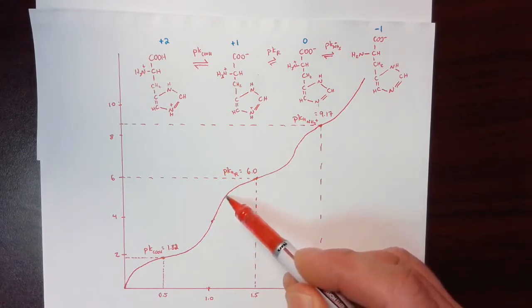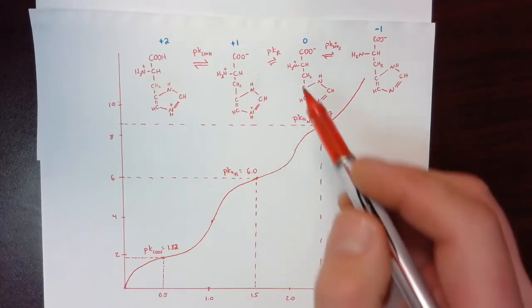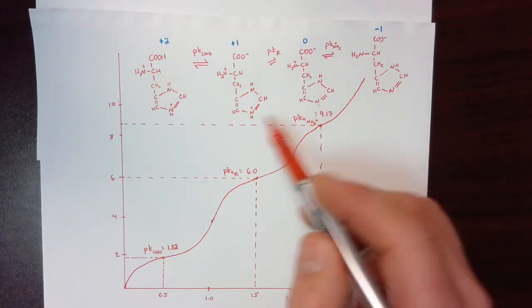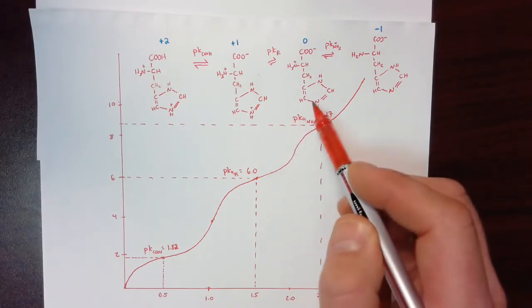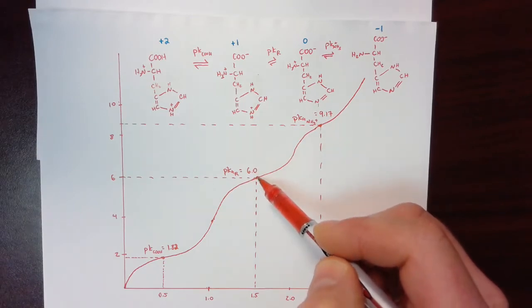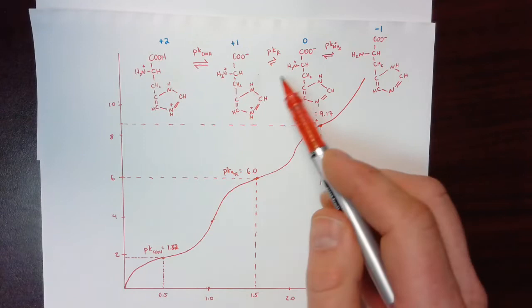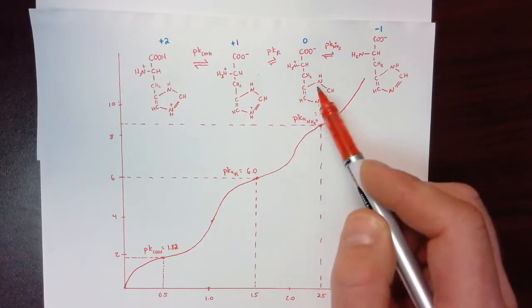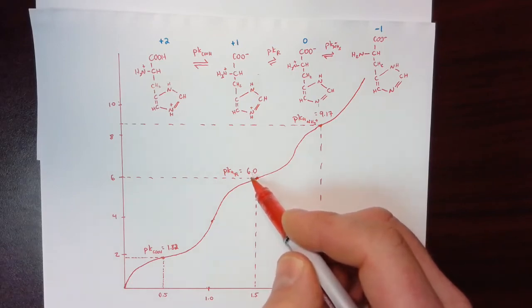Continuing on up adding more and more base, the second proton to come off is in the R group. That's what's indicated by this PKR. And that is this proton right here. So the proton on the imidazole ring comes off, and then at the PKR at 6, that form here is in 50% proportion and this form is in 50% proportion. So these two are at equal concentrations at the PKR or at a pH of 6.